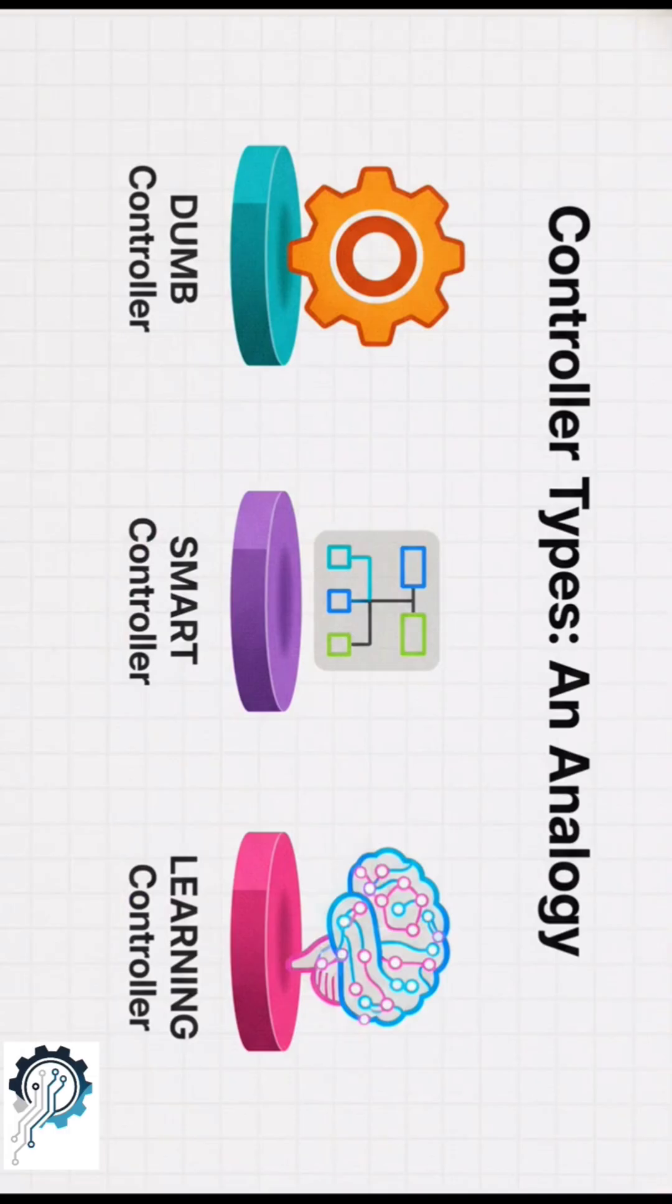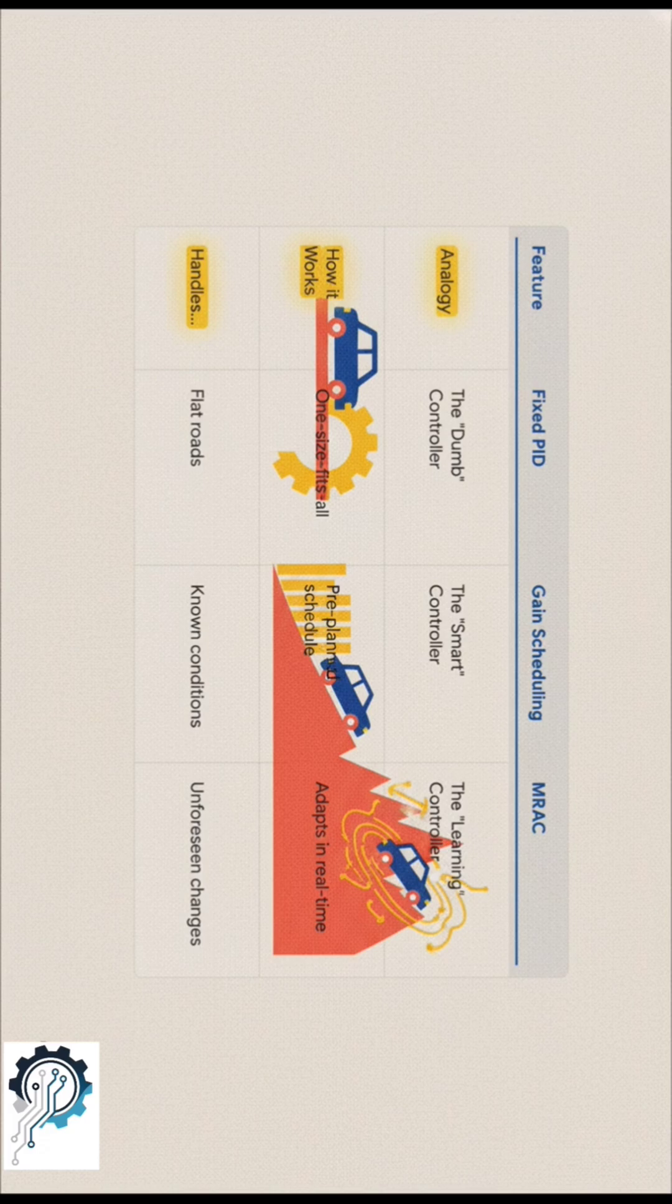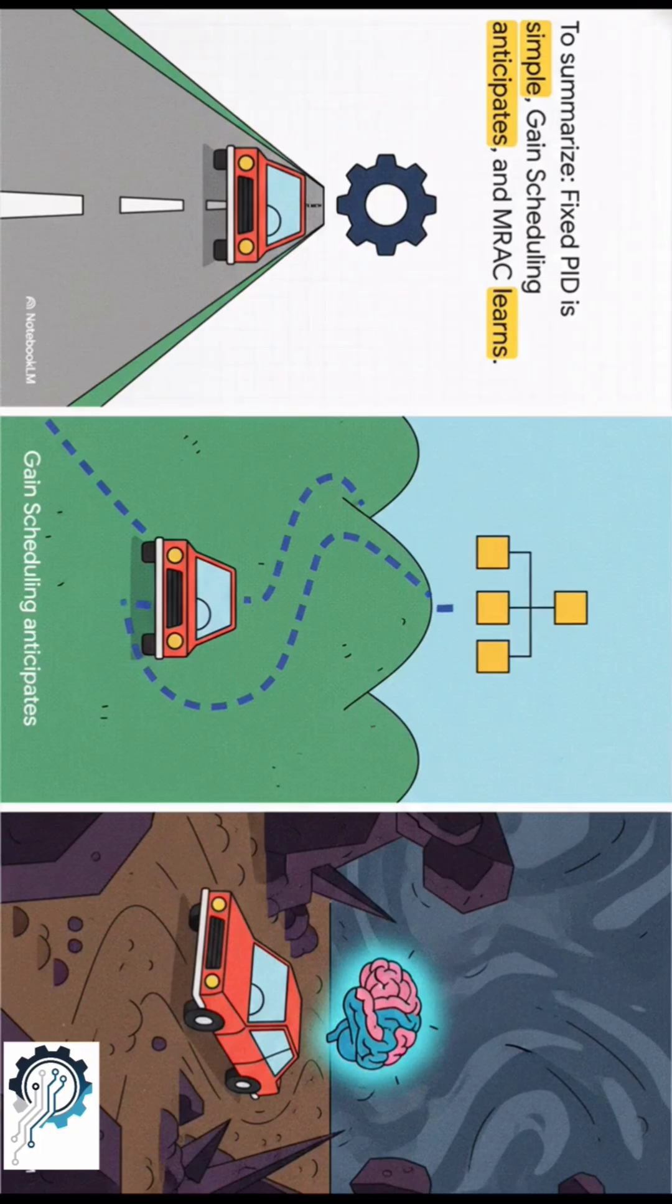Okay, let's put it all together. We can really think of these as the dumb, smart, and learning controllers. You can see the evolution here. The dumb controller is one size fits all. The smart one has a plan. And the learning controller? It adapts on the fly to things you could never plan for.